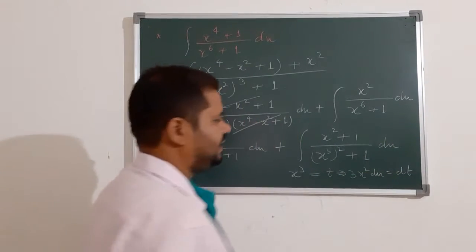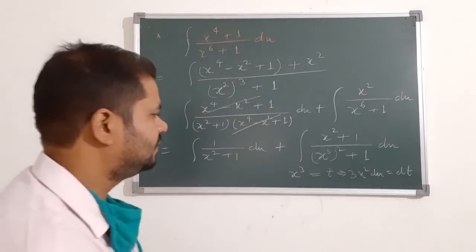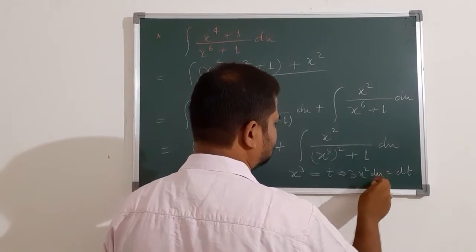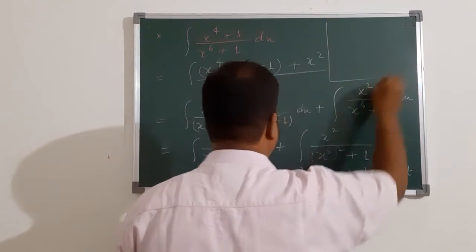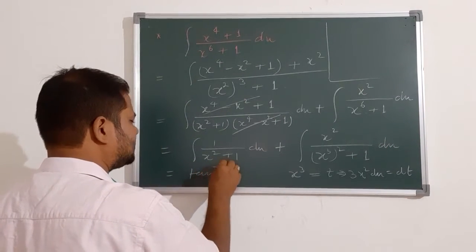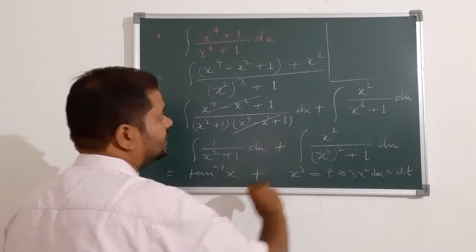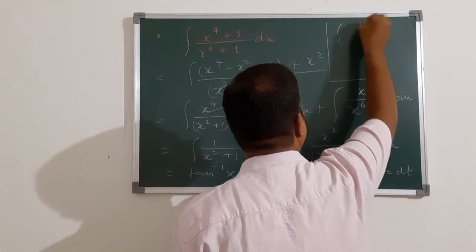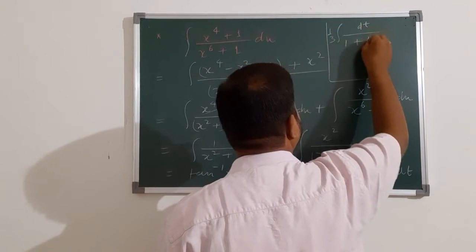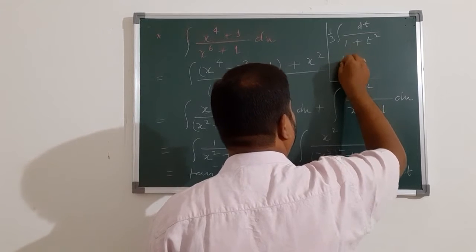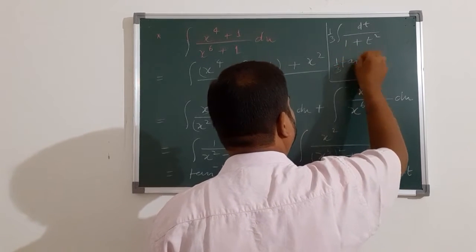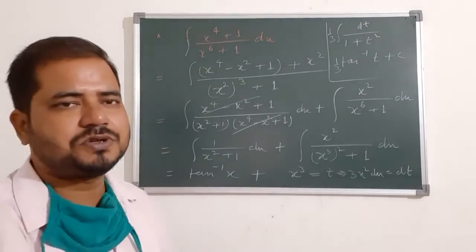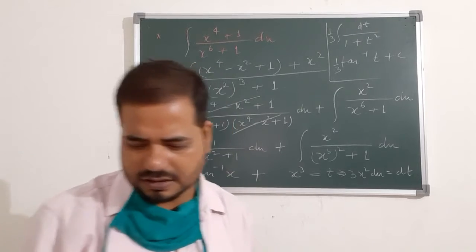With x cubed equal to t, we get 3x squared dx equal to dt, so x squared dx equals dt by 3. The first part gives tan inverse x plus c. For the second part, substituting, we get 1 upon 3 times the integral of 1 upon (1 plus t squared) dt, which is nothing but 1 upon 3 times tan inverse t plus c. After substituting back the value of t, we get the complete solution.